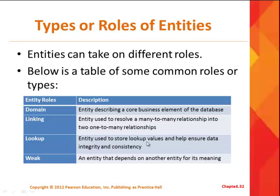Then there's something called a lookup entity — we haven't seen examples of these yet, but they'll come up in other chapters. Think of it as a code used to look up a value. For example, you might have a code in your employee table describing their level in the company, like A1. You can link that to another table that describes those codes — maybe A1 is an entry-level employee, A2 means they got one promotion. That's a lookup table.